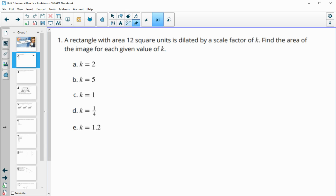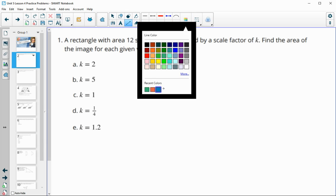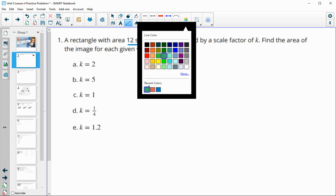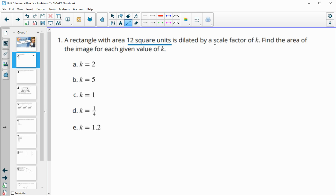Number one gives us a rectangle with an area of 12 square units. Then it would like us to dilate this rectangle by a scale factor of K and find the new areas.